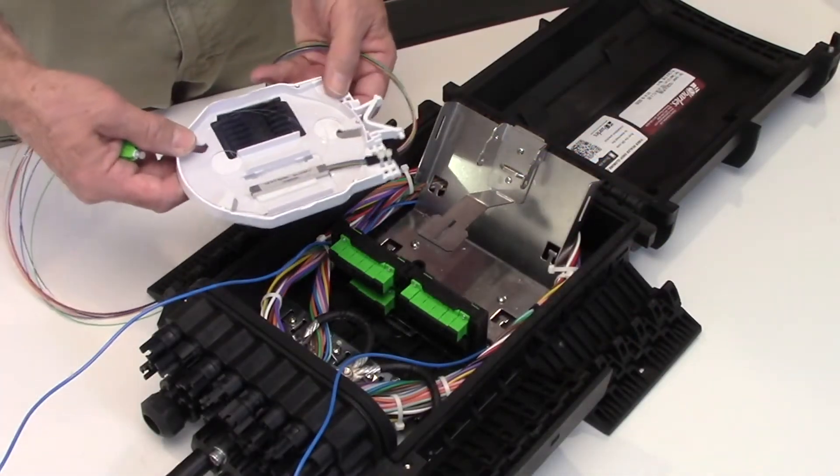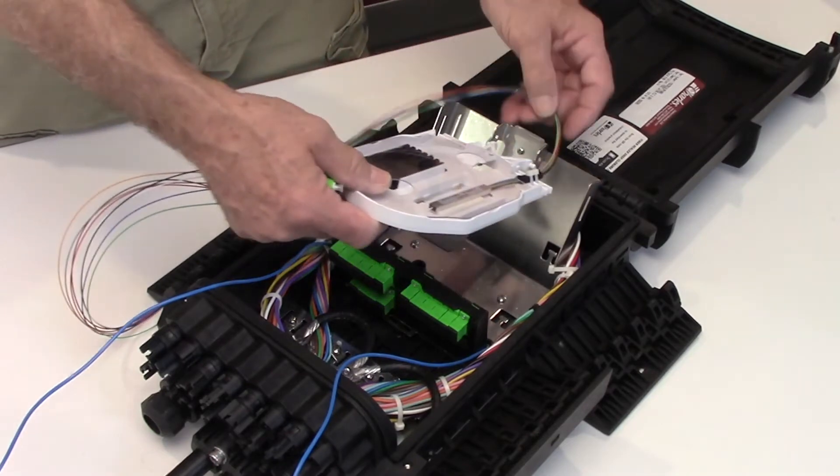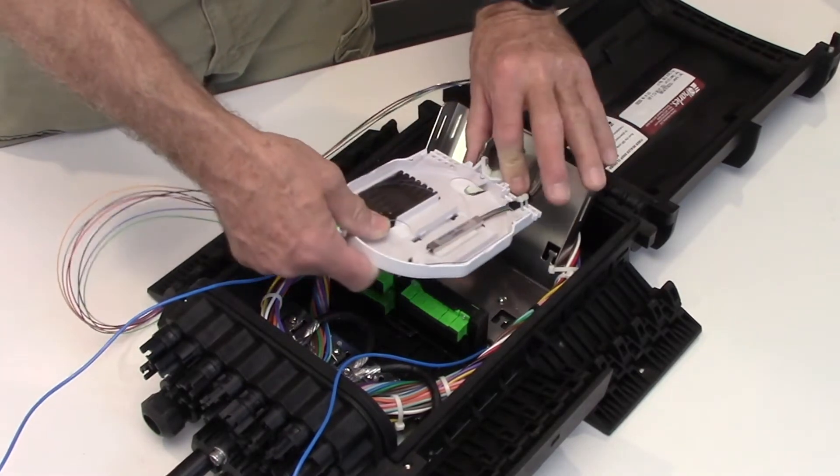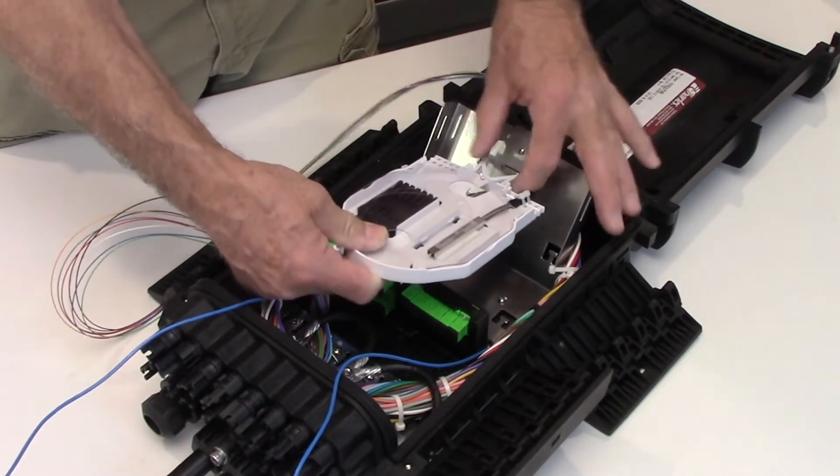Install the splitter tray into the hinge fixture. The tray hinge can be pressed into place. The buffer tube loop can now be marked for tube removal.